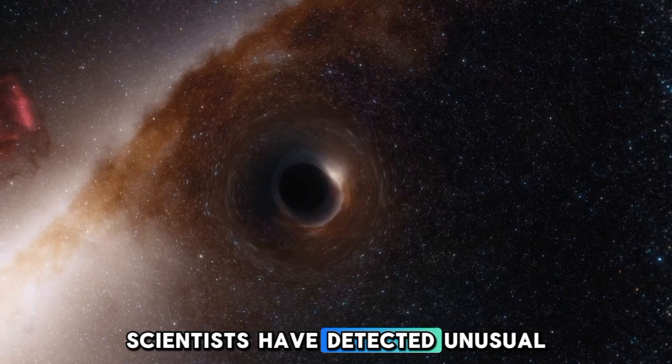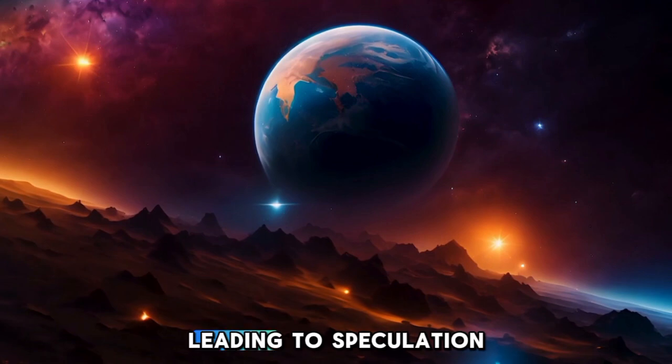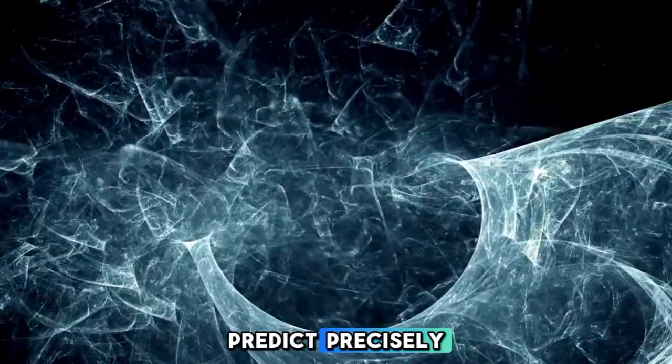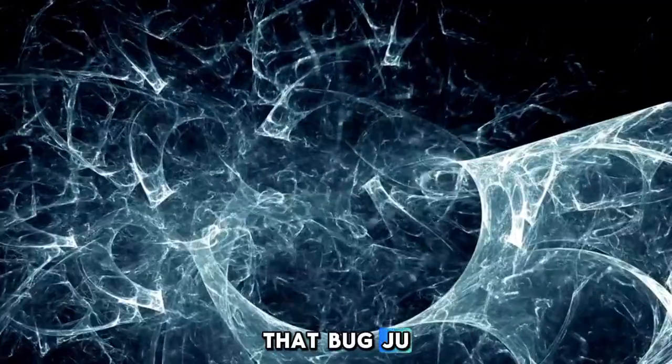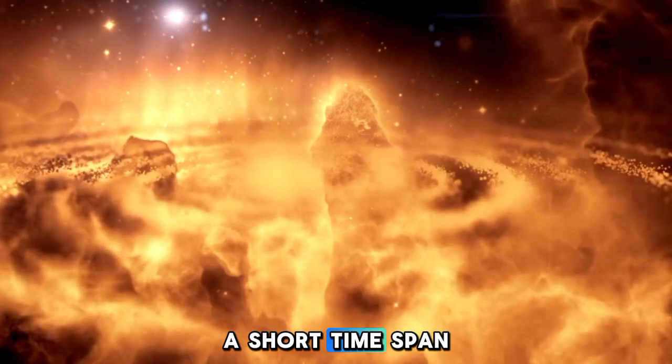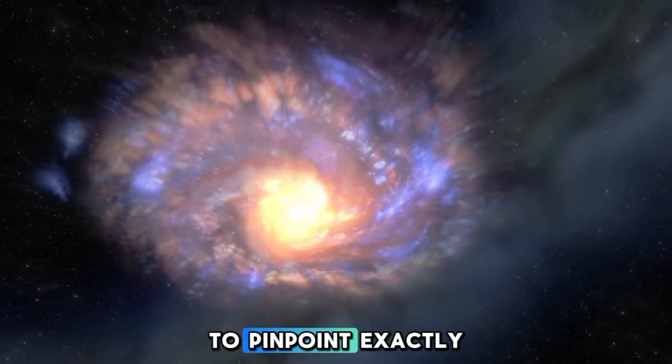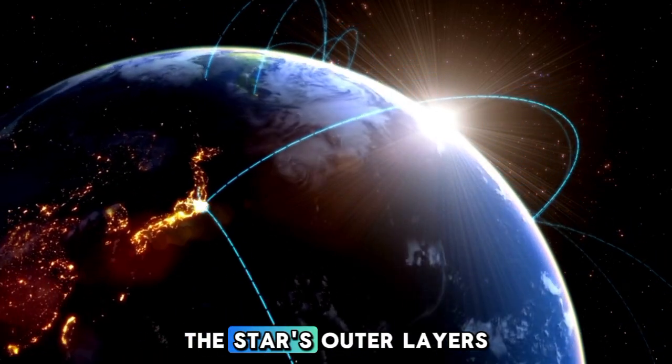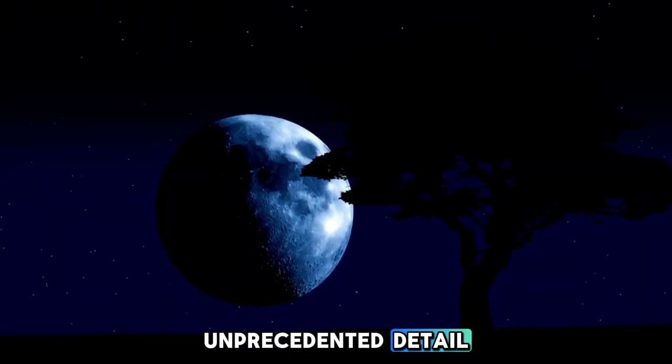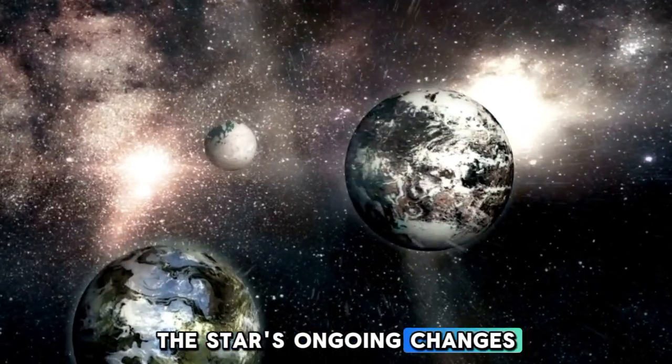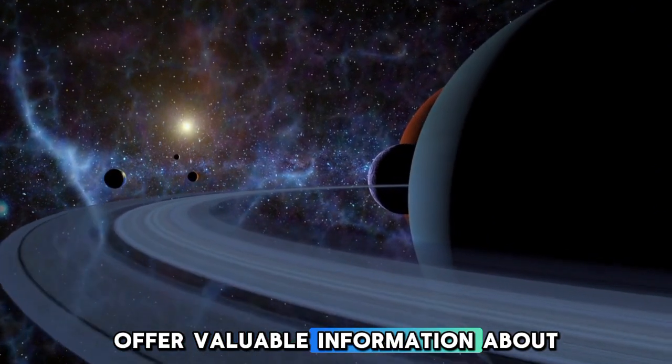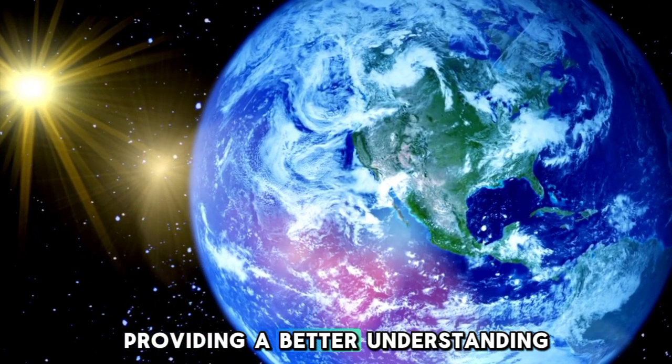Interestingly, scientists have detected unusual changes in Betelgeuse's brightness in recent years, leading to speculation that the star could be on the brink of a supernova. However, despite these variations, it is challenging to predict precisely when the star will explode. Some experts have suggested that Betelgeuse could go supernova within the next 100,000 years. The James Webb Space Telescope has provided new insights into the star's behavior. Its infrared capabilities allow scientists to study the star's outer layers and magnetic fields in unprecedented detail. The JWST's findings have confirmed the star's ongoing changes, including its irregular brightness and potential instability. These observations offer valuable information about the processes leading up to a star's death, providing a better understanding of stellar evolution.